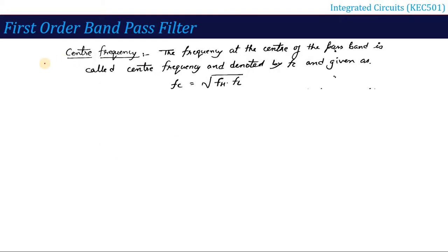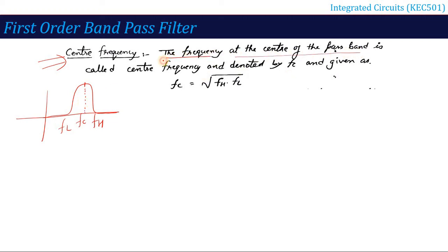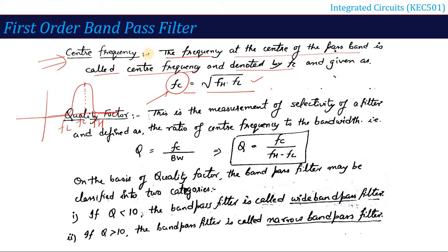Another definition is the center frequency. We have said this is our band which passes. We have fL and fH, and there is a center point — the frequency at the center of the pass band is called the center frequency, denoted fC. Remember, this fC is not the cutoff frequency we talked about in low pass and high pass filters. The center frequency fC is calculated as the square root of fH multiplied by fL.